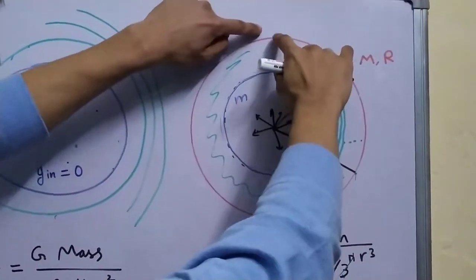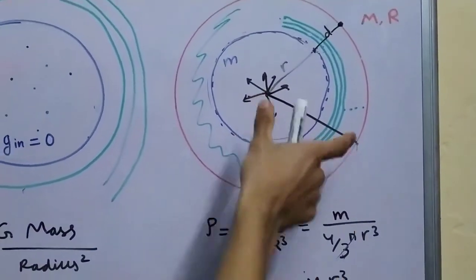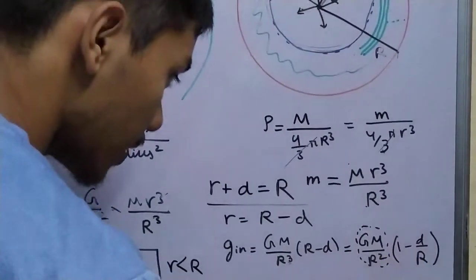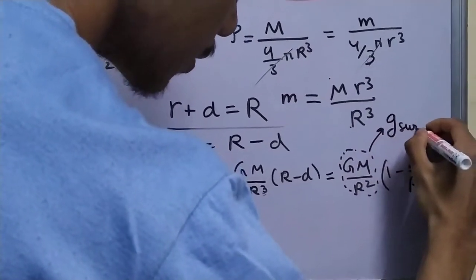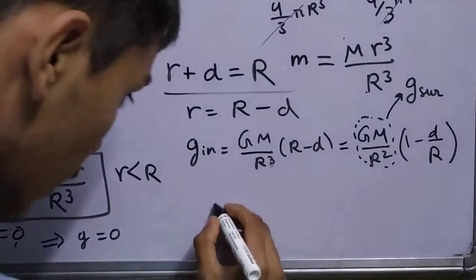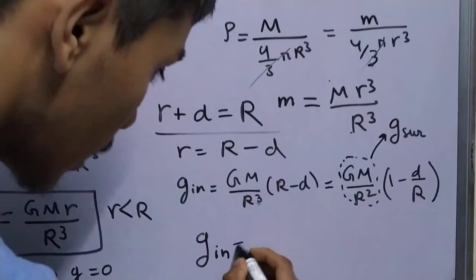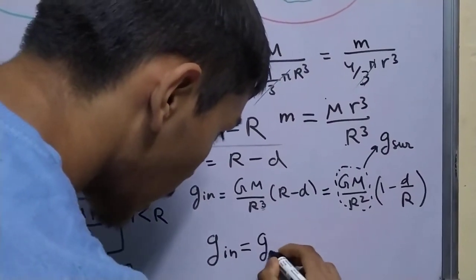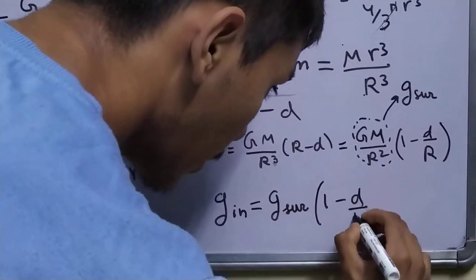G capital M is the mass of this entire planet and R is the radius of this entire planet. So we can write this as your g at surface. This gives us another relation that your g inside is equal to g at surface times 1 minus D upon R.